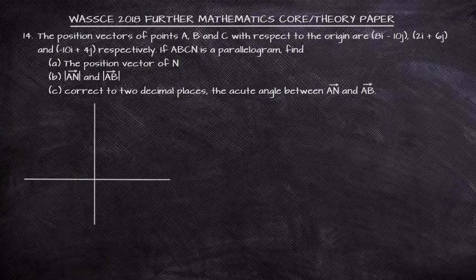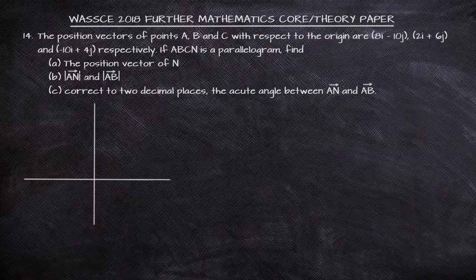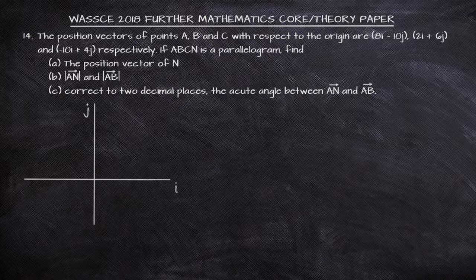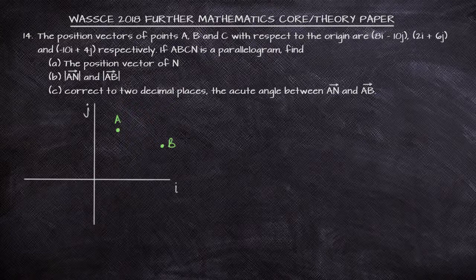A good overview of our vectors before we go ahead to launch into this video. Normally, when we are talking about vectors, we are talking about a quantity that has both direction and magnitude. If you are to draw our vector components, components I and component J, let's assume that we are looking at two position vectors A and B.